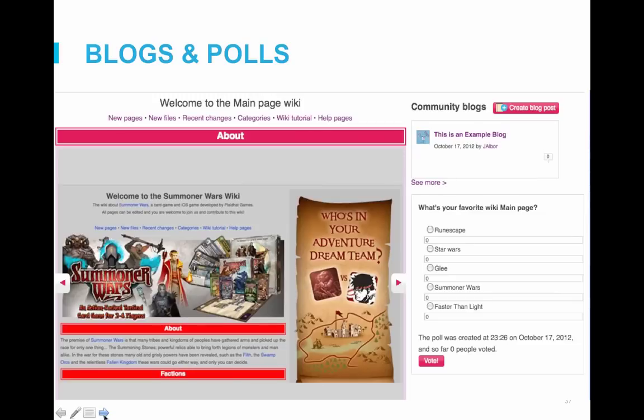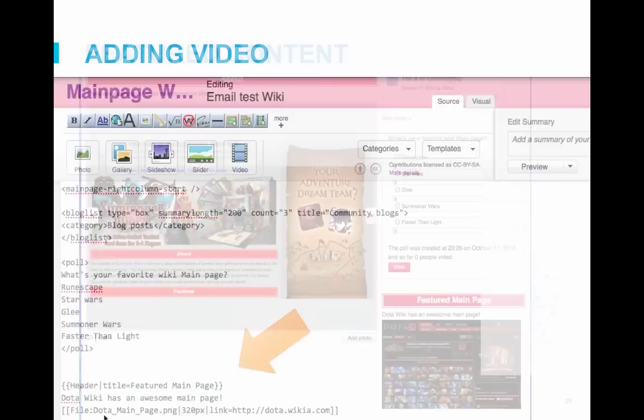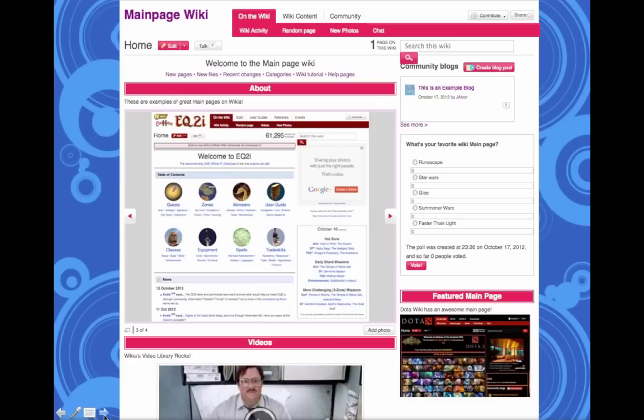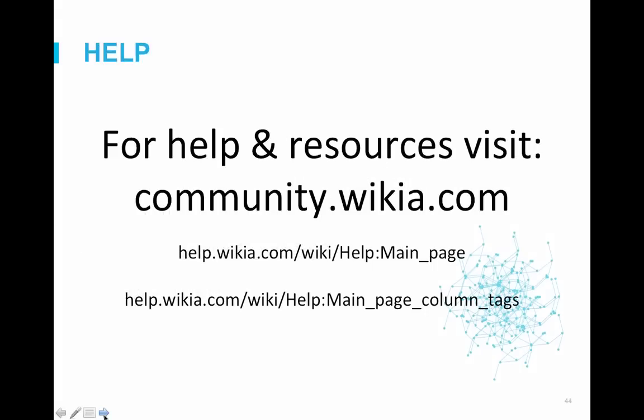Where can I look up all of these tags? The help page on main page column tags has some of them. I believe there is also a help page called 'HTML tags' — and if there isn't, this inspires me to create one. I'd recommend checking out the help wiki, and if something doesn't work, send a message to staff or post on the community forum — that's a great way to get answers from other users.